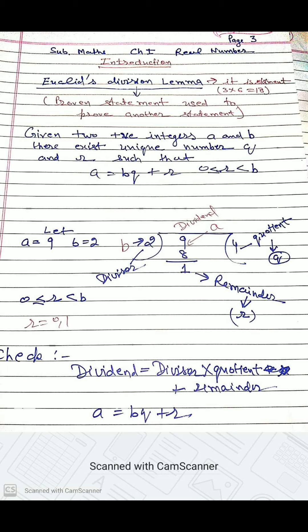So we can write a equals bq plus r, where r greater than equal to zero, less than b. Let's try with an example. Let a equal 9, b equal 2.